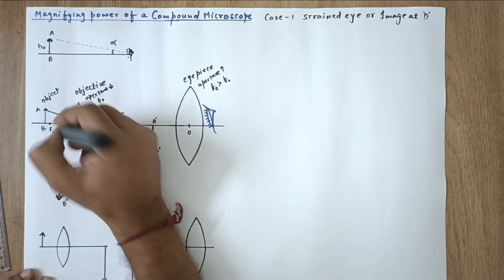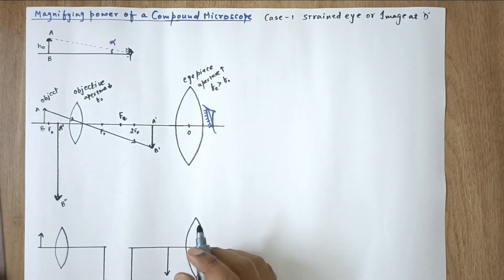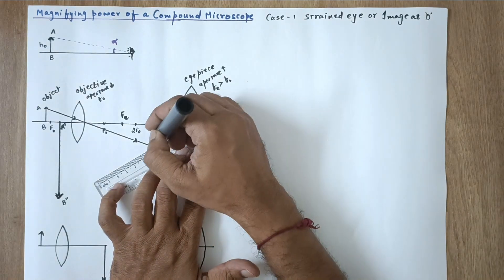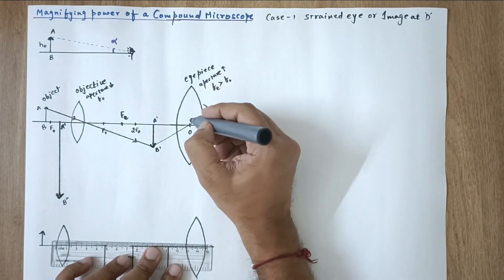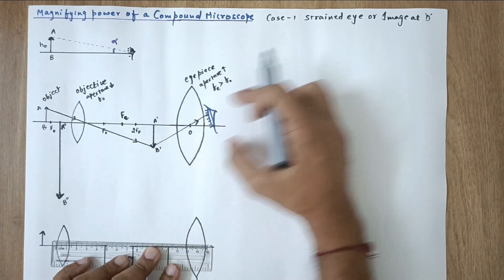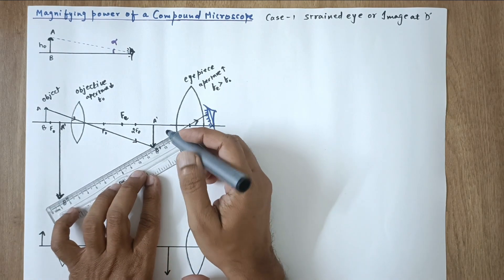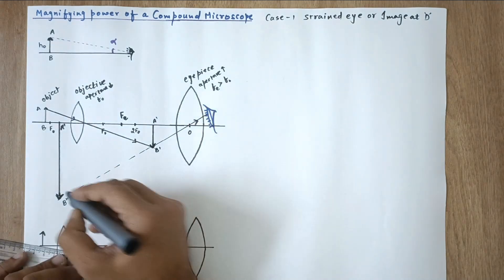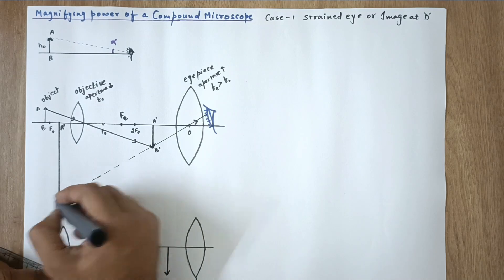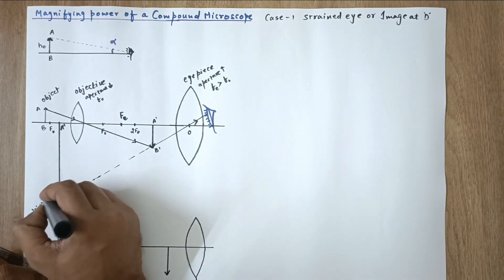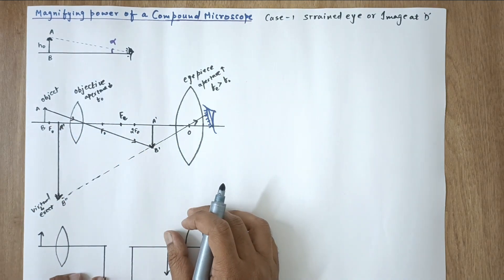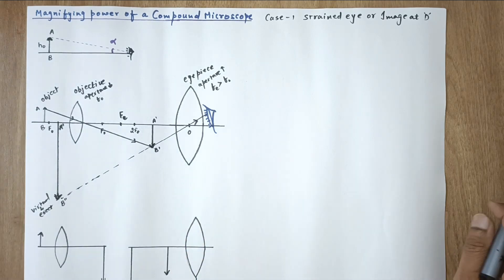To draw the ray diagram for the eyepiece, simply pass a ray through the optical center O. The second ray diverges, and extending both rays backwards gives the final image. This final image is virtual and erect, but highly magnified — because both lenses are magnifying the object to some extent.